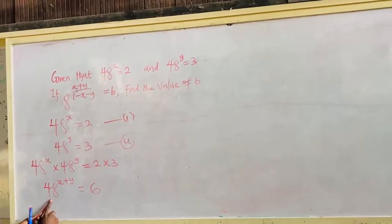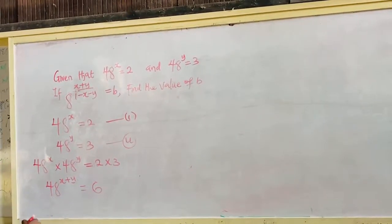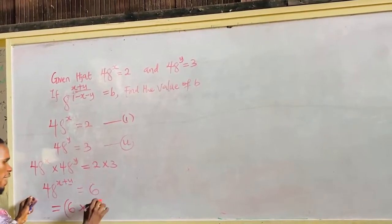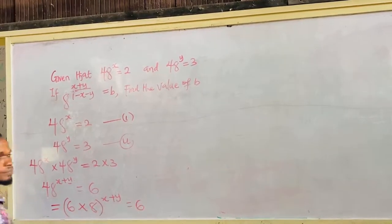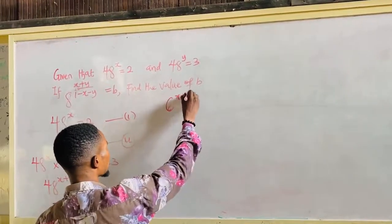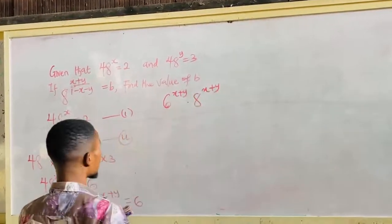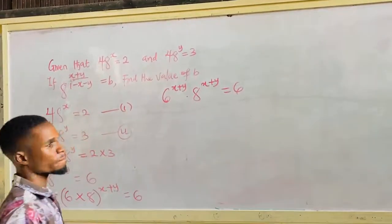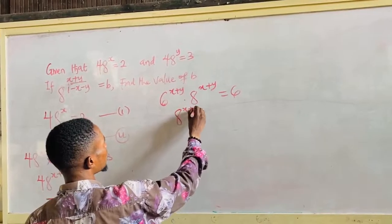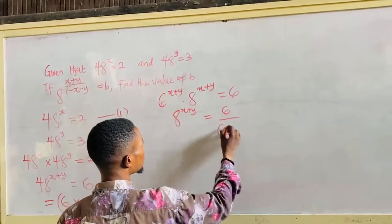Now 6 is a factor of 48, and 8 is also a factor of 48. Now 48 can be written as 6 times 8. So 48 raised to the power of x plus y equals 6, and I can distribute the power: 6 raised to the power of x plus y multiplied by 8 raised to the power of x plus y, which is equal to 6.